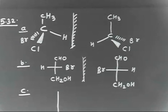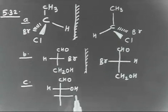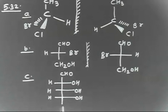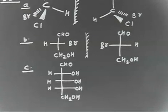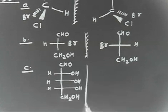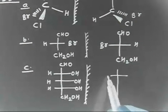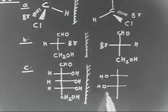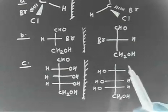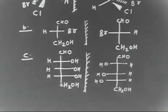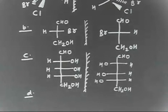For molecule C, again draw the enantiomer if possible. You have CHO, then OH, OH, OH three times, and finally CH2OH. Draw the mirror image. The mirror image has OH, OH, OH, OH on each side, with CH2OH here and CHO here. This is the mirror image of this compound.